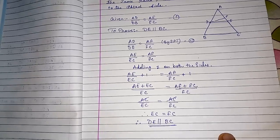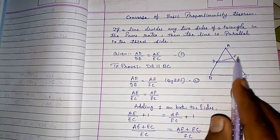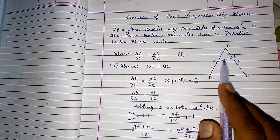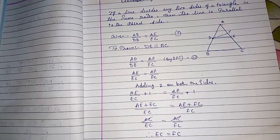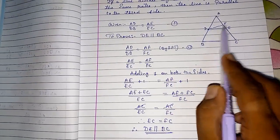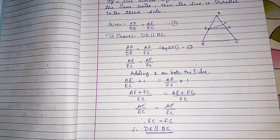So this way we can prove converse of basic proportionality theorem. First we have to suppose, we have to make an imaginary line parallel to BC. And then we have to solve by this way. And at last we will get that E and F are the same point. So we can say that DE parallel to BC.